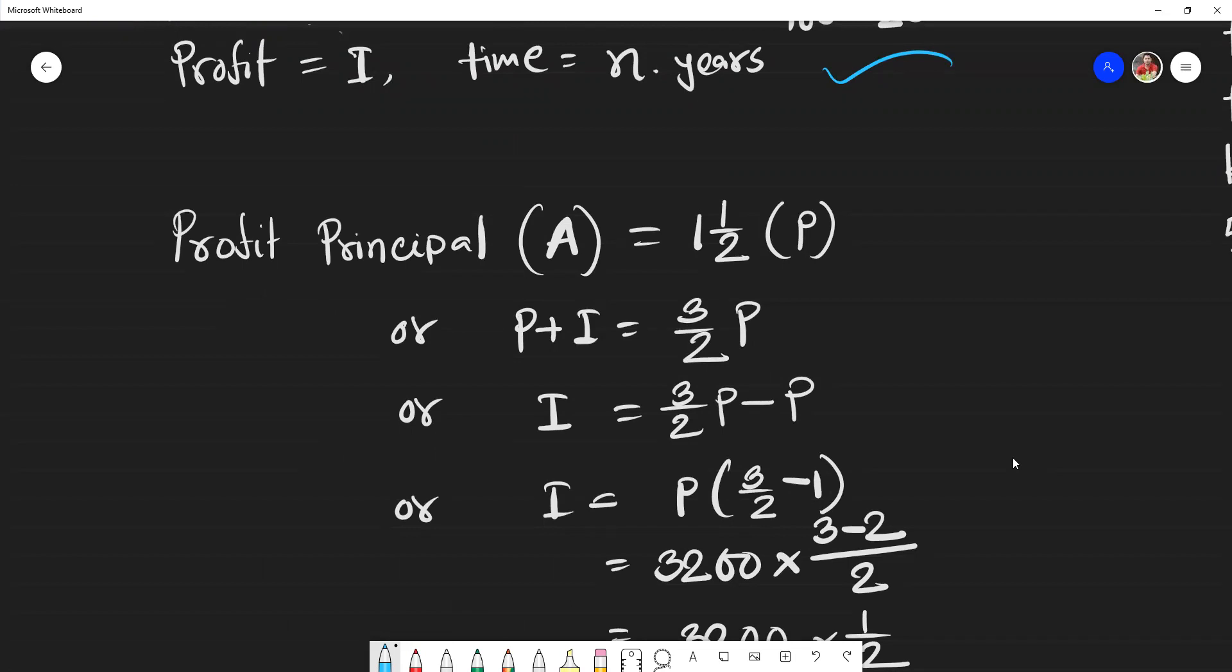According to the question, one and a half means 1.5. Using LCM, 2 LCM with 1, 2 plus 1, that means 3/2. So the profit-principal ratio is 3/2.